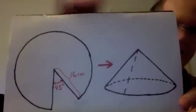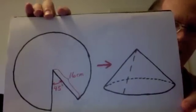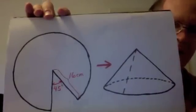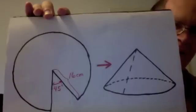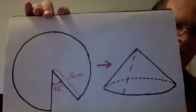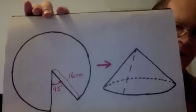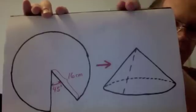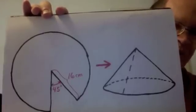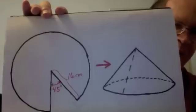We have a circular disk and it has been cut from the center. A portion of it has been cut out at a 45 degree angle. The disk has a radius of 16 centimeters. Then the disk is formed into a cone, as you see here, by bringing the two straight sides — the sides forming the 45 degree angle — bringing them together.